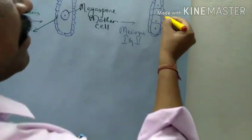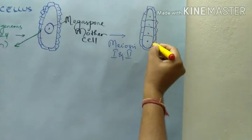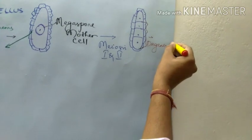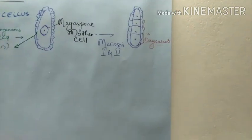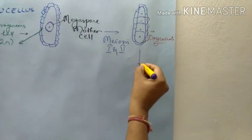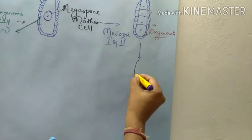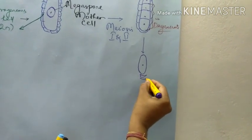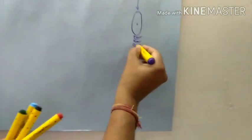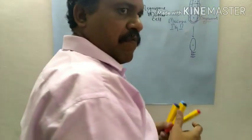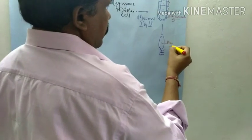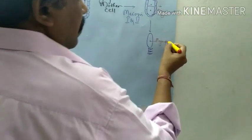3 cells will degenerate. So what we are getting here — this is proceeding and you will only be left with one. All others have degenerated. We are left with only one, and that one is what is called as Megaspore.